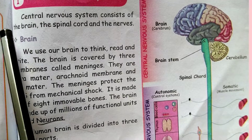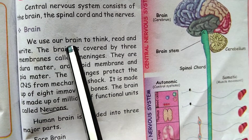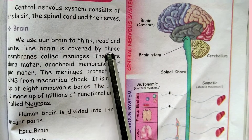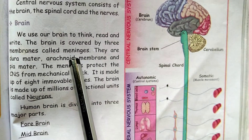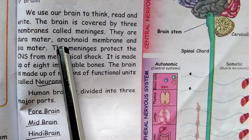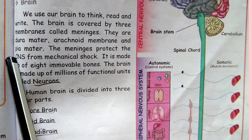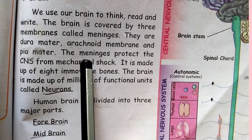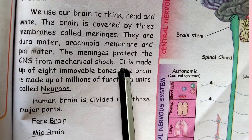The Central Nerve System consists of the brain, the spinal cord, and nerves. We use our brain to think, read, and write. The brain is covered by three membranes called meninges. They are dura mater, arachnoid membrane, and pia mater. The meninges protect the CNS from mechanical shock.